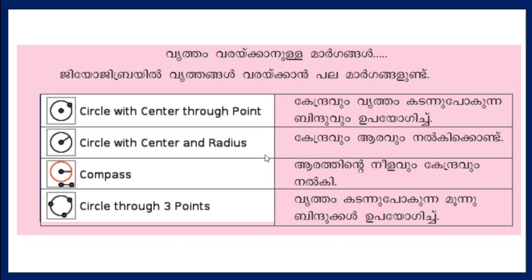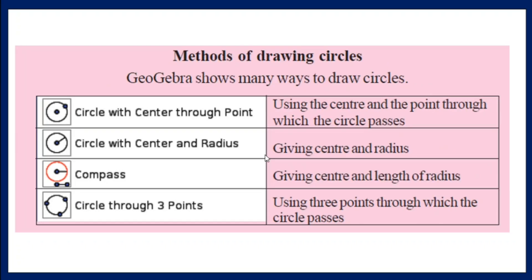There are four circle tool options: first, circle with center and point — using the center and the point through which the circle passes; second, circle with center and radius — giving center and radius; third, compass — giving center and length of radius; and fourth, circle through 3 points — using 3 points through which the circle passes. If we're doing it practically, click and learn about each option.